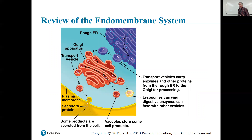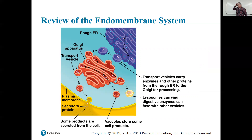Here's a review of the endomembrane system — you could be asked which of these is or is not a member of the endomembrane system. Members include: the nucleus, the rough ER, transport vesicles, the Golgi apparatus, and the plasma membrane.